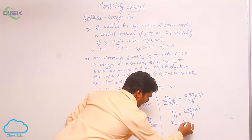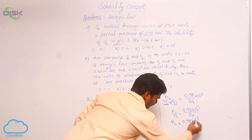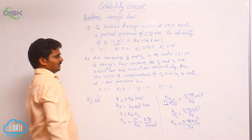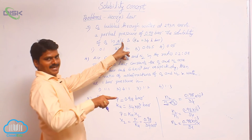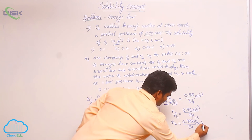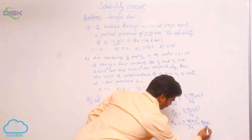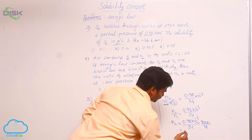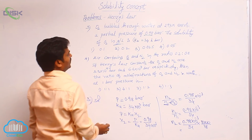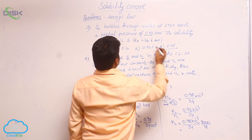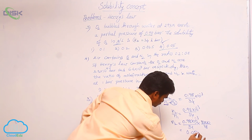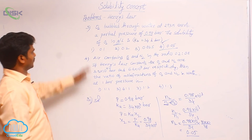So n2 is equal to 0.98 into 10 power minus 3 by 34, multiplied by the number of moles of solvent. Solvent weight is 1000 grams, solvent molecular weight is 18, so n1 equals 1000 by 18, that means 55.55. If you calculate this, you will get the mole fraction solubility as 0.05. This is the solution for the third question.